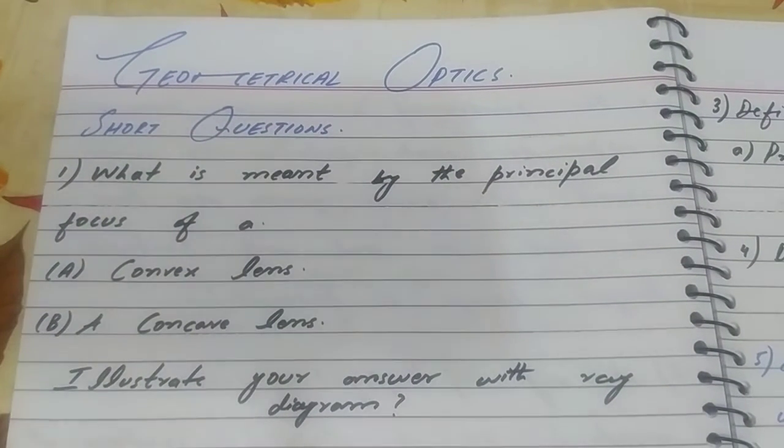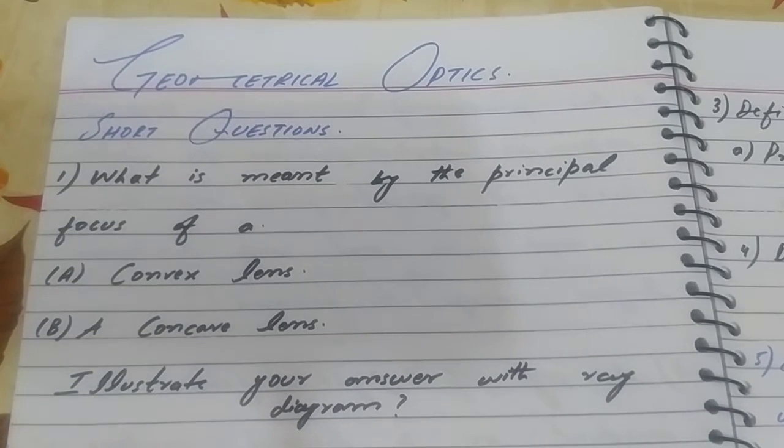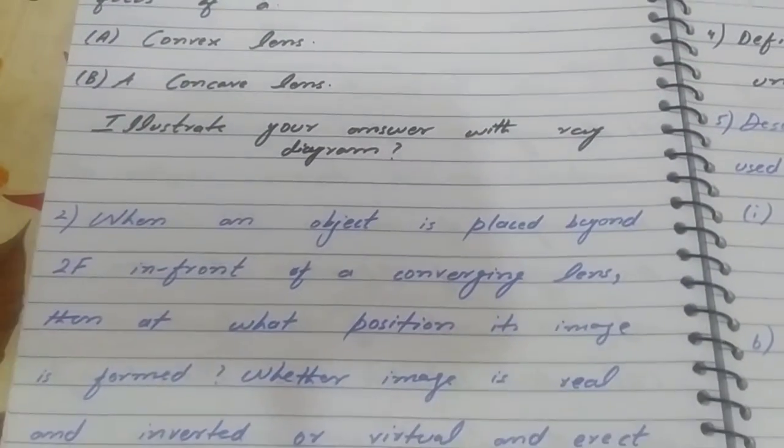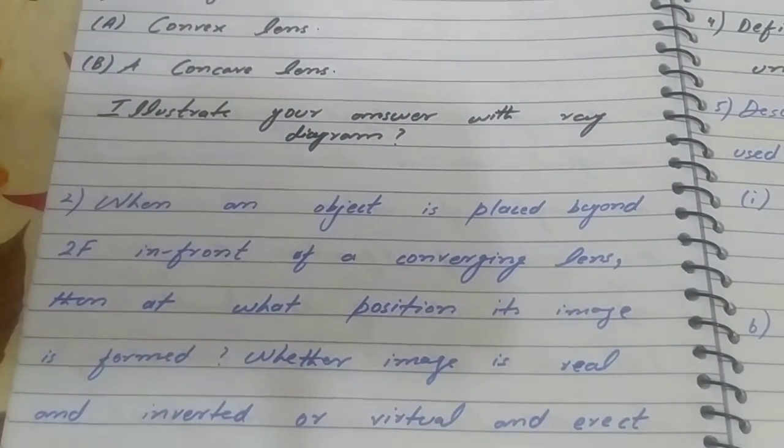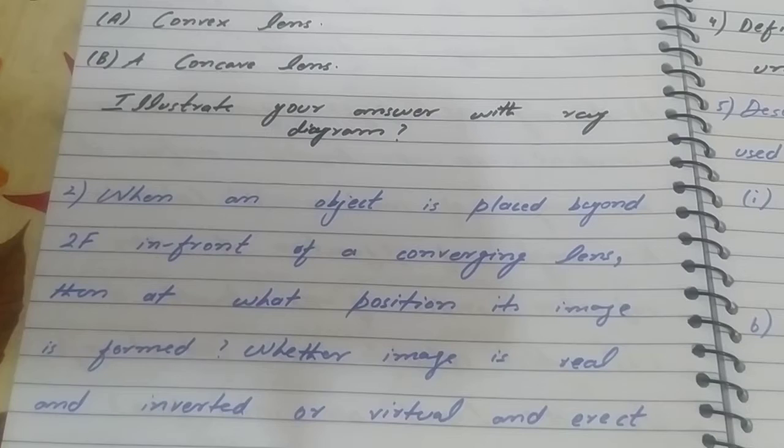Next question: What is meant by the principle focus of a convex lens and concave lens? Illustrate your answer with ray diagram. Question two: When an object is placed beyond 2F in front of a converging lens, at what position is its image formed?